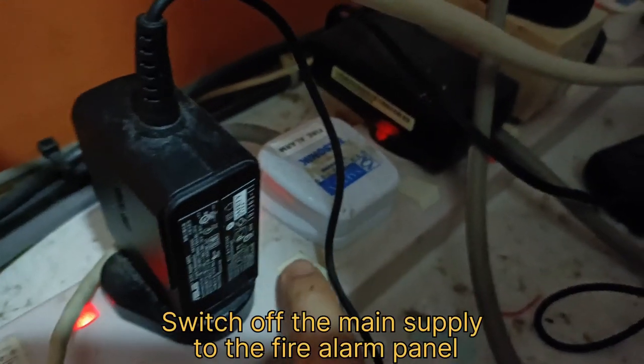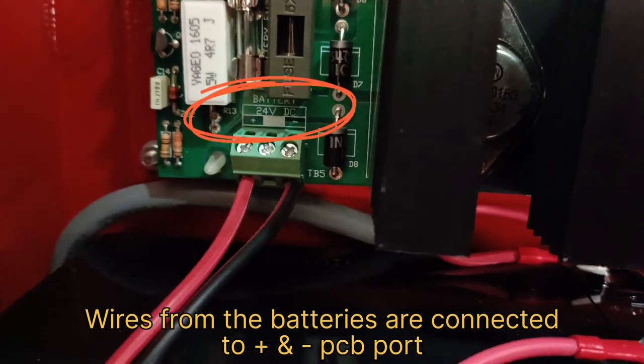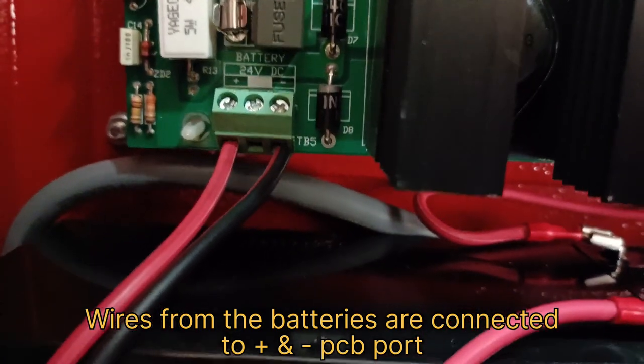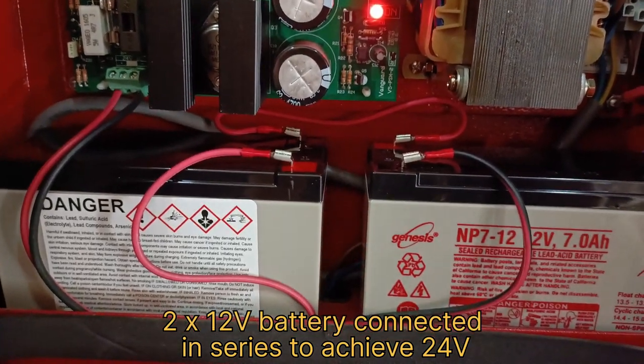Remember to switch off the main supply to the fire alarm panel. Wires from the battery are connected to the positive and negative terminals of the PCB. Two 12V batteries are connected in series to achieve 34V.